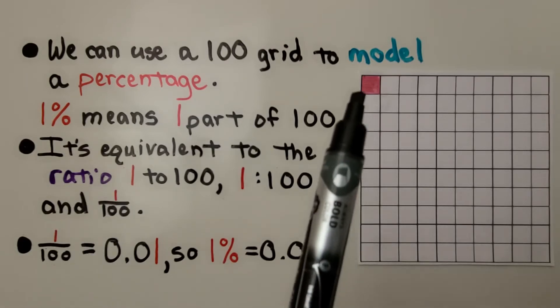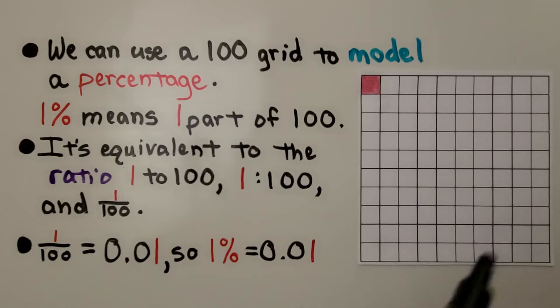We have one shaded out of 100 and since one hundredth is equal to the decimal 0.01 as one hundredth, that means one percent is equal to the decimal 0.01. And we'll get into that a little bit more in lesson 8.2.